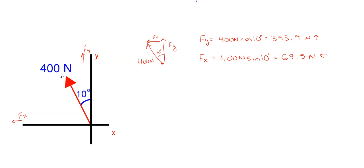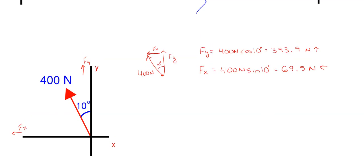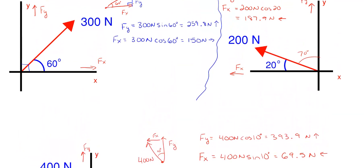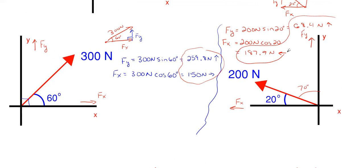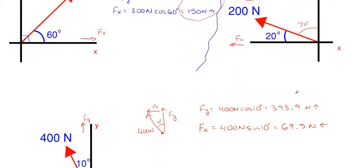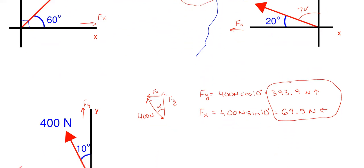That encapsulates the very first step. As you get better, you don't have to draw out the individual force diagrams and little triangles — you can go straight to writing equations, which is much faster. We have split our three forces into six forces: three in the FX direction and three in the FY direction. Now we are going to combine them in each direction.